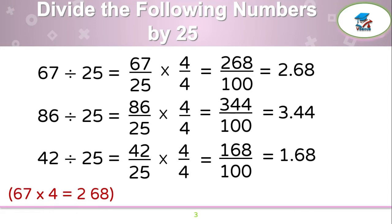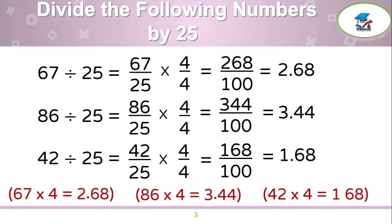But it can be simplified like this. Just multiply 67 by 4, which is 268, and move the decimal point 2 digits left — your answer becomes 2.68. Now, 86 multiplied by 4 is 344; move the decimal point 2 digits left and that becomes 3.44. Next, 42 times 4 is 168; move the decimal point 2 digits left, which gives 1.68.